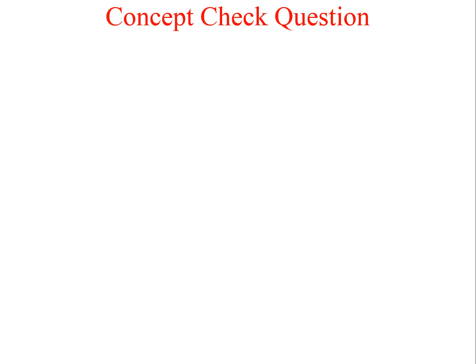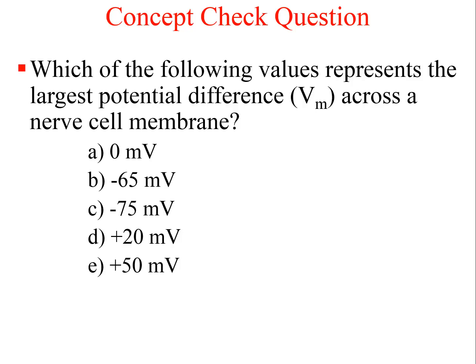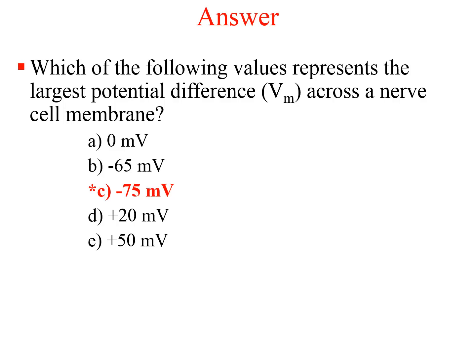Another concept check: Which of the following values represents the largest potential difference across a nerve cell membrane? Zero millivolts, minus 65 millivolts, minus 75 millivolts, plus 20 millivolts, or plus 50 millivolts. The answer is minus 75 millivolts. The number indicates the magnitude of charge separation across the membrane — that is, the amount of electrical potential difference or voltage — while the sign simply indicates whether the inside surface is more negative or more positive relative to the outside.